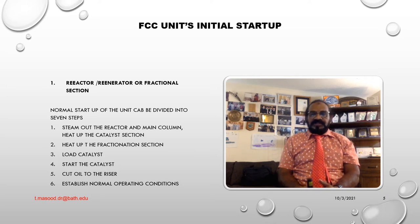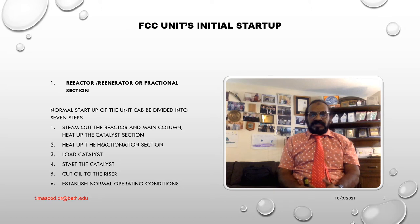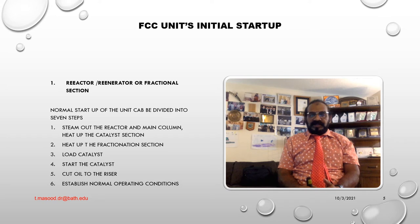Reactor Regenerator Section and Fractionation Section. The normal start-up of the unit can be divided into different sections: Number 1, Steam out the Reactor and Main Column; heat up the Catalyst Section. Number 2, Heat up the Fractionation Section. Number 3, Load Catalyst. Number 4, Start the Gas Compressor. Number 5, Circulate Catalyst. Number 6, Cut-off to the Risers. Establish Normal Operating Conditions.